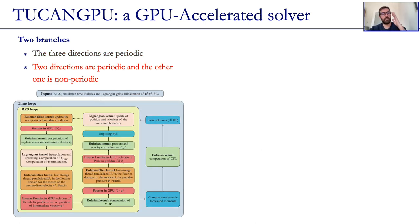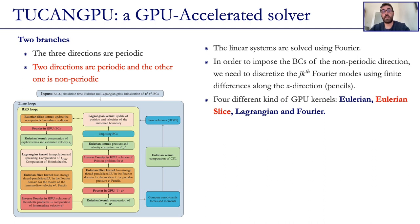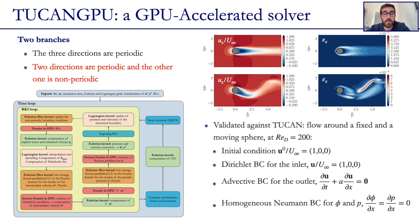On the other hand, the second branch has two directions that are periodic and one that is non-periodic. The linear systems again are solved using Fourier, but in order to impose the boundary conditions of the non-periodic direction, we need to discretize the J and K Fourier modes using finite differences along the X direction. This is what we call pencils. In order to account for the pencils computation, we introduce a new kind of GPU kernel, which we have called Eulerian slice.